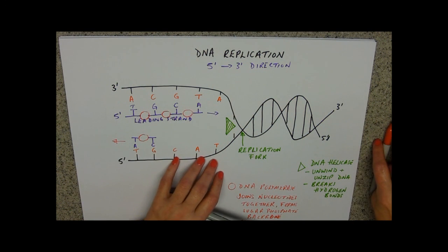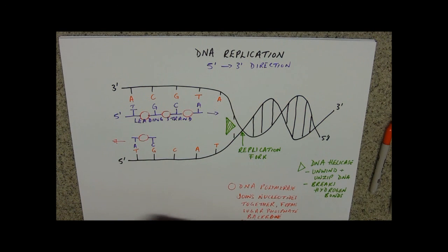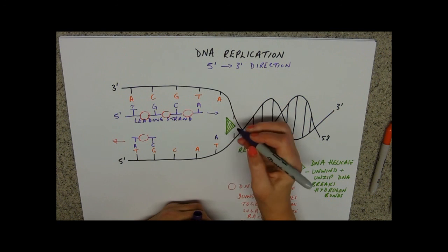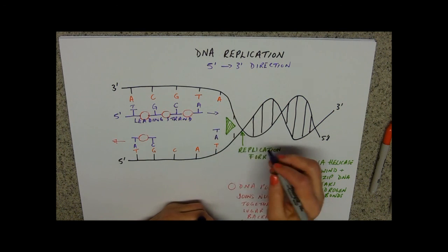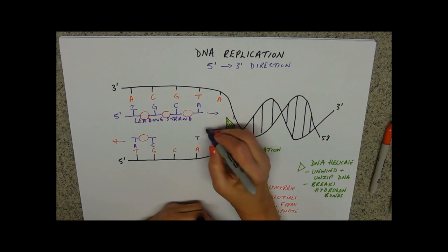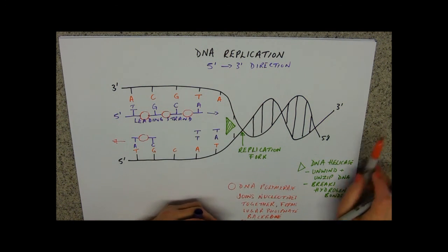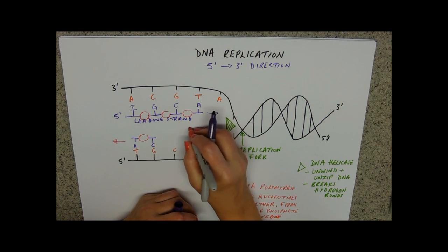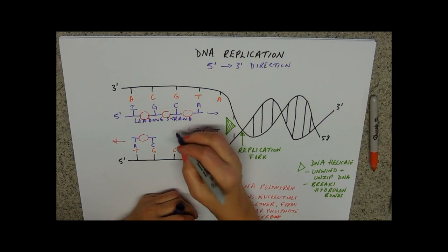But it hasn't done anything with these three yet. So it will attach the A to the T here, and then it will work its way down to the next one, and add on a G there.